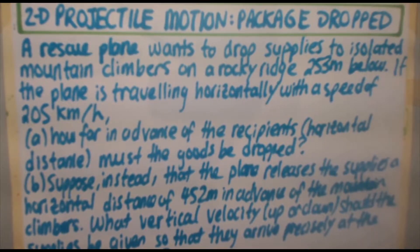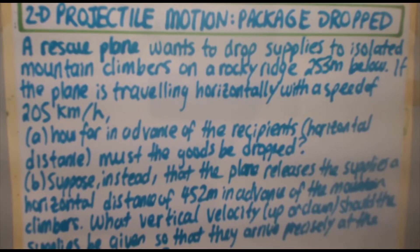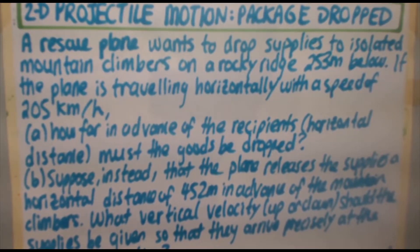Here's the original problem again. We have a rescue plane that wants to drop supplies to isolated mountain climbers on a rocky ridge 253 meters below. The plane's traveling horizontally at 205 kilometers per hour. We have already converted that to meters per second in video number 45, so if you want to catch that or how to do part A, be sure to check that video out before proceeding to this one. In this video we're going to be doing part B and C.